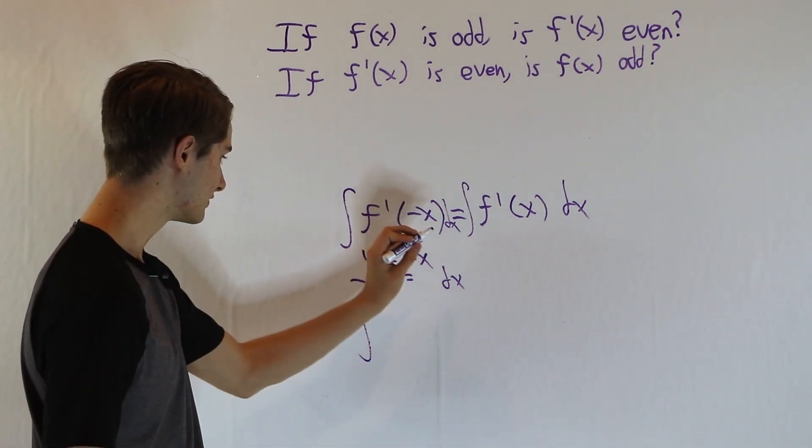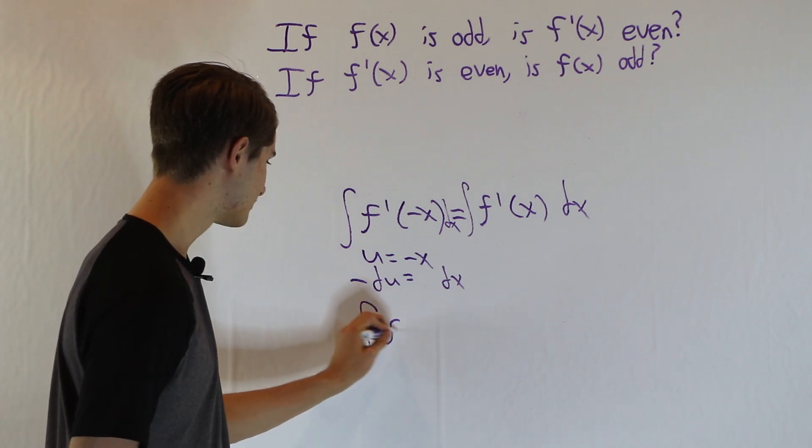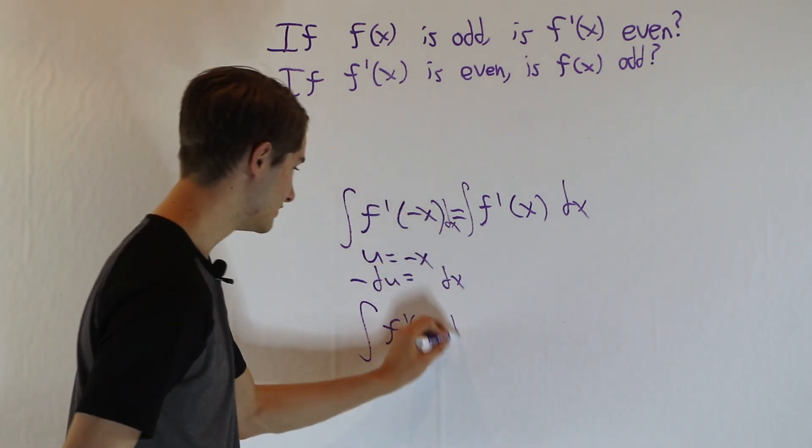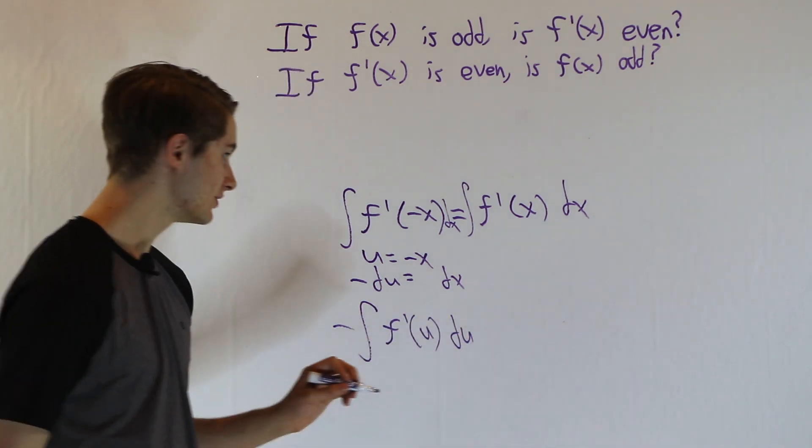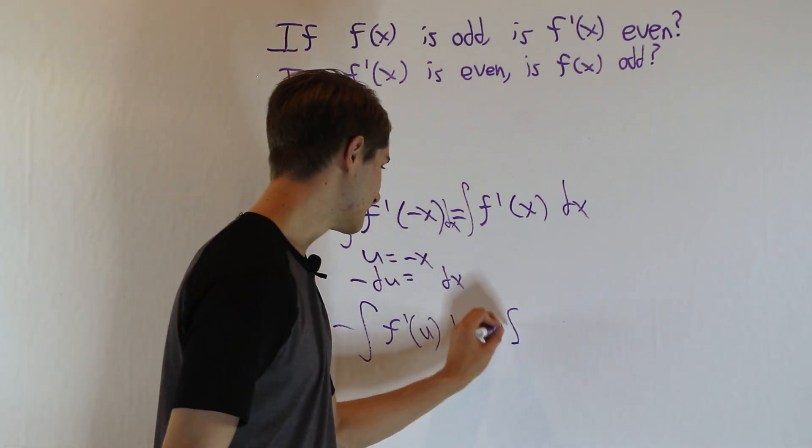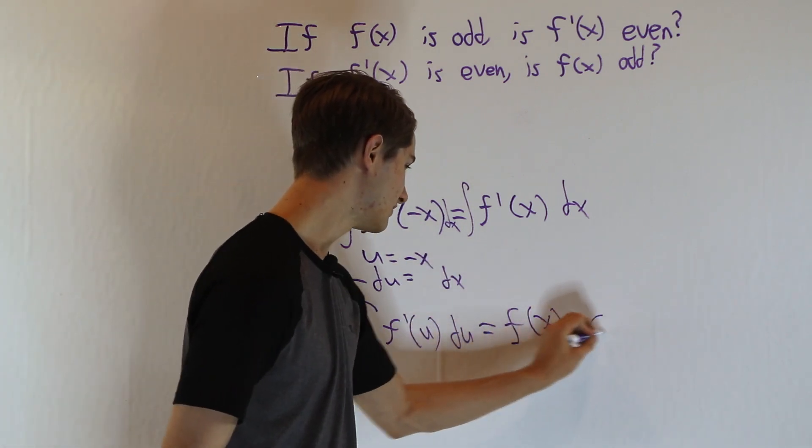That means our integral over here becomes f prime of u, and then dx becomes negative du. So we can put the du here, take the negative out front, and then we have the integral of f prime of x is nicely f of x plus c.